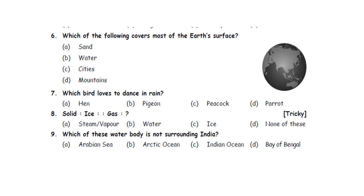Question six: Which of the following covers most of the earth's surface? A. Sand. B. Water. C. Cities. D. Mountains. Water covers most of the earth's surface — about three-fourths of earth's surface is covered with water. So the answer is option B.